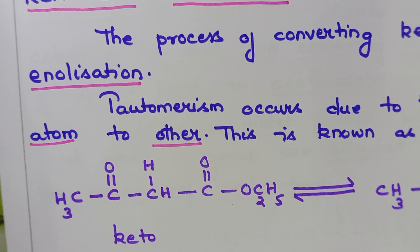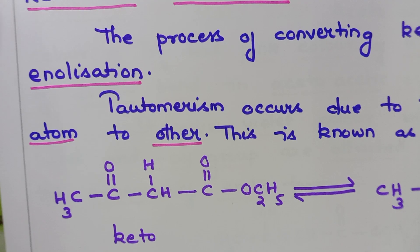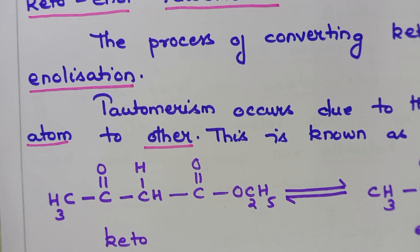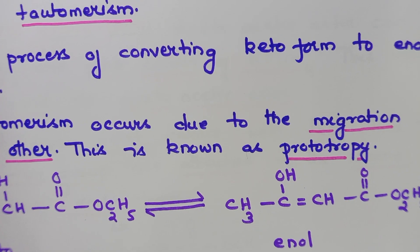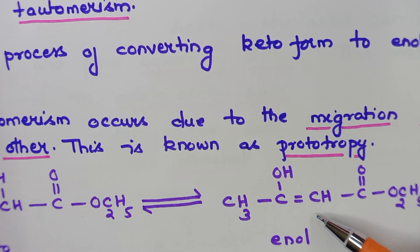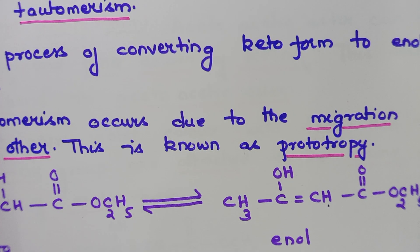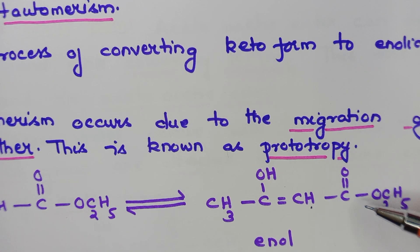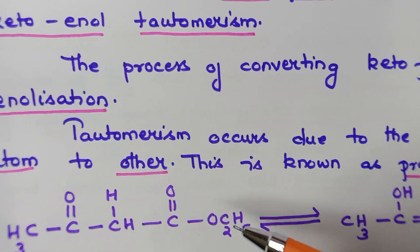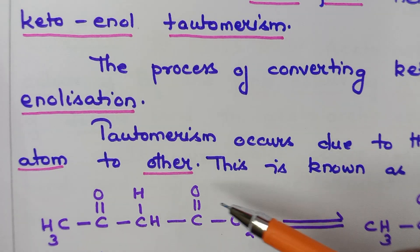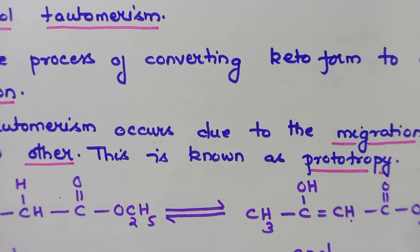This keto form is converted into the enolic form — that means enolization has taken place. The enolic form of acetoacetic ester is CH₃–C(OH)=CH–C(=O)–OC₂H₅. Both are acetoacetic ester only — the same compound — but this is the keto form and this is the enolic form.